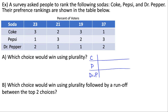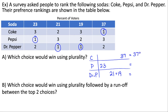Notice the table says percent of voters — sometimes you're given a percent of voters where all numbers add up to 100 instead of a specific count. Here, 23% ranked Pepsi first, 21% ranked Dr. Pepper first, 19% ranked Dr. Pepper first, and 37% ranked Coke first. Adding these up: Coke has 37%, Pepsi has 23%, and Dr. Pepper ends up with 40%. So Dr. Pepper wins the plurality election.